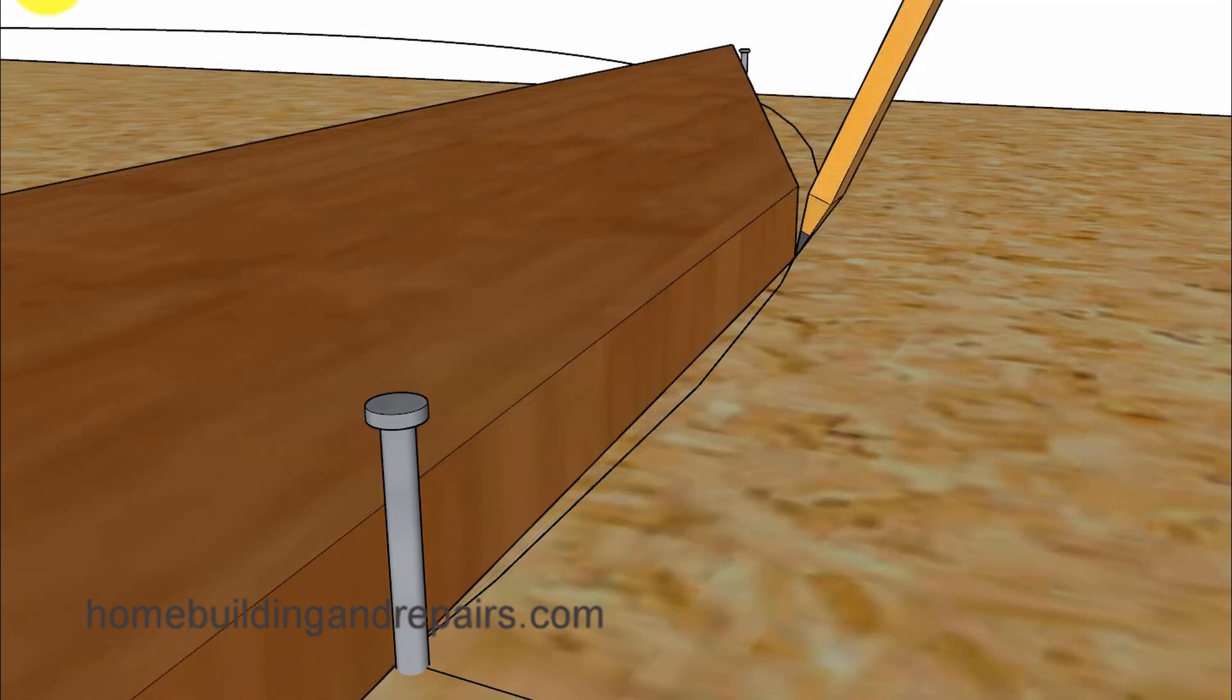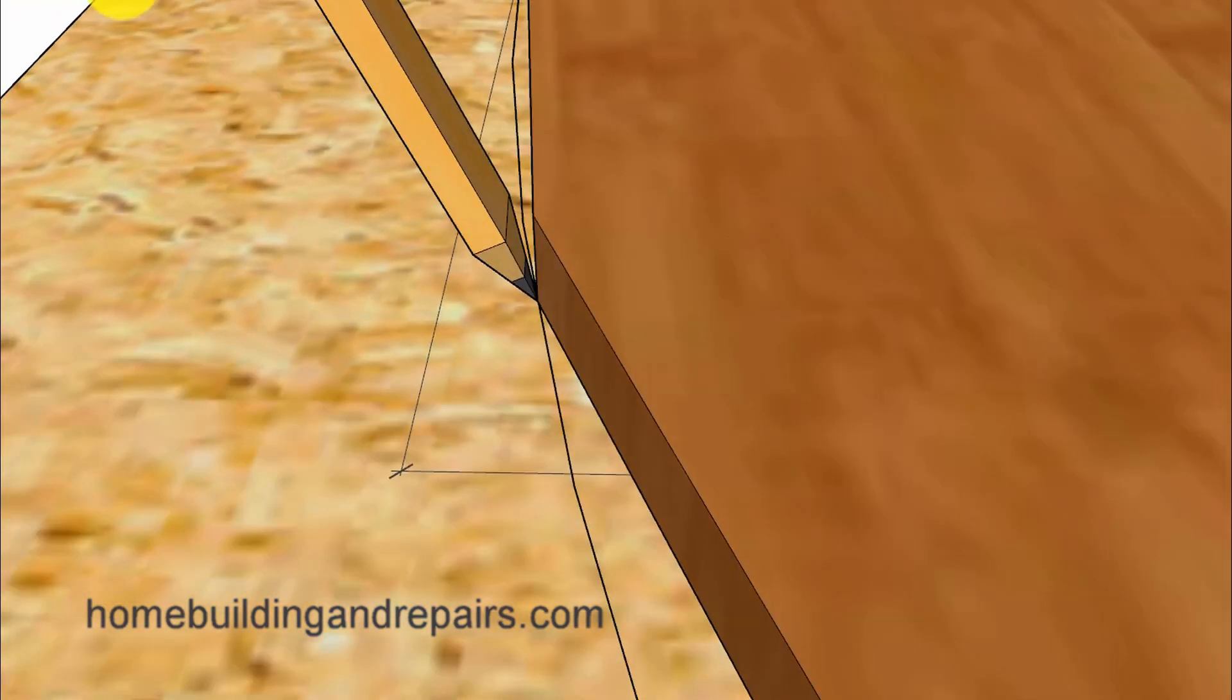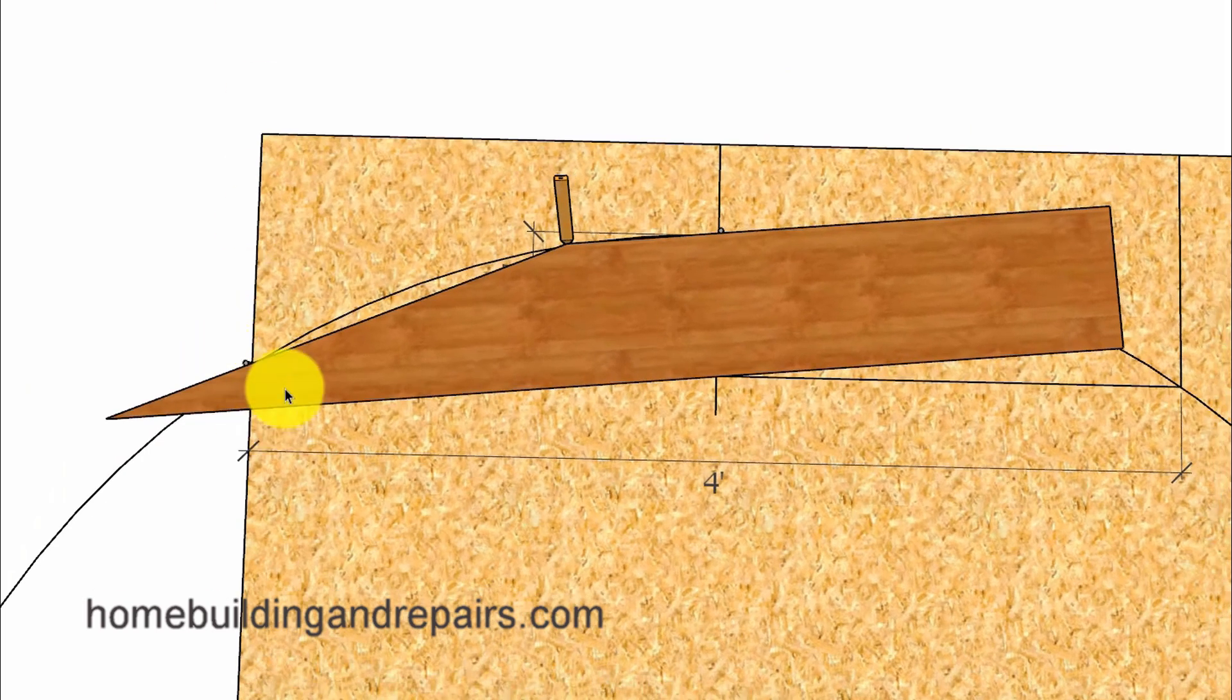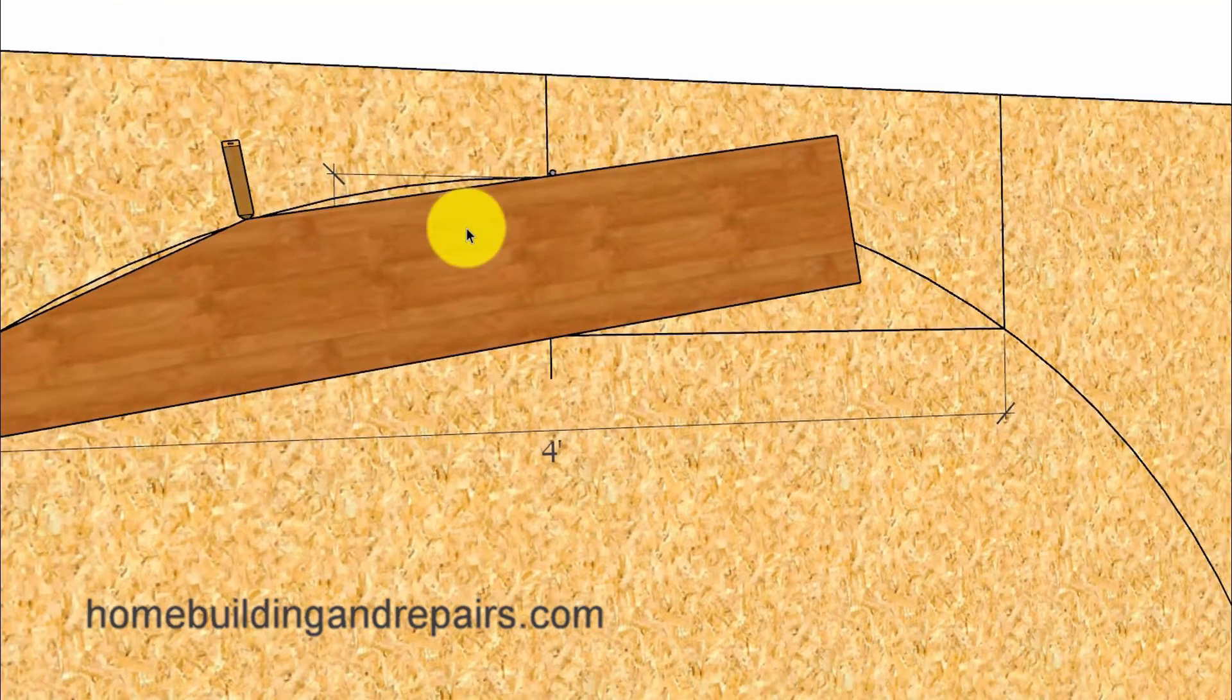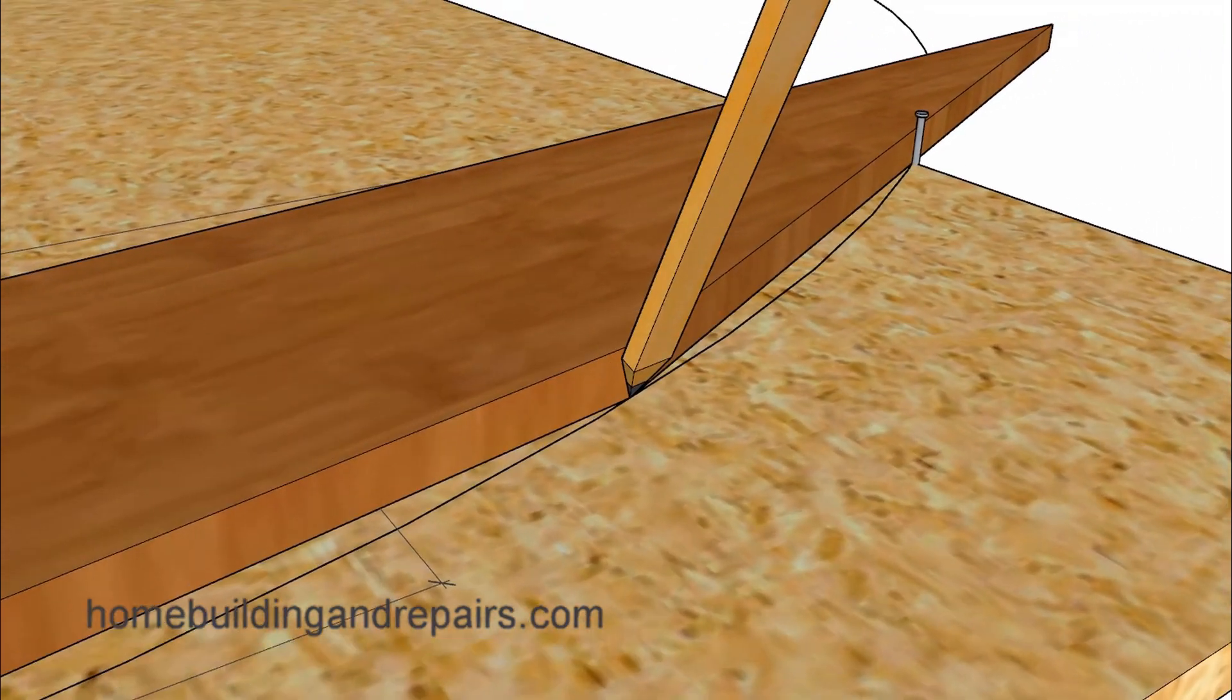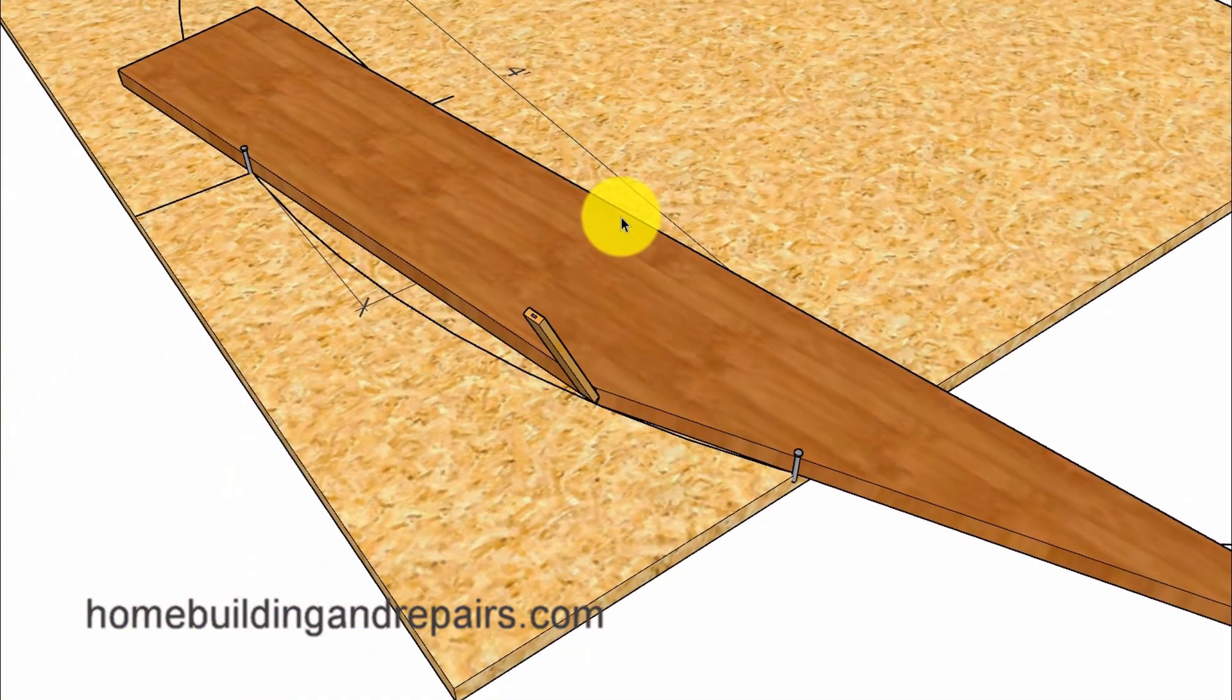You will just continue running the pencil at that point while you slowly move the guide board over and keep it tight up against the nails or blocks you're using. As we move the board over, you can see where it's still lining up, providing us with a nice accurate line that we can use to cut our arc.